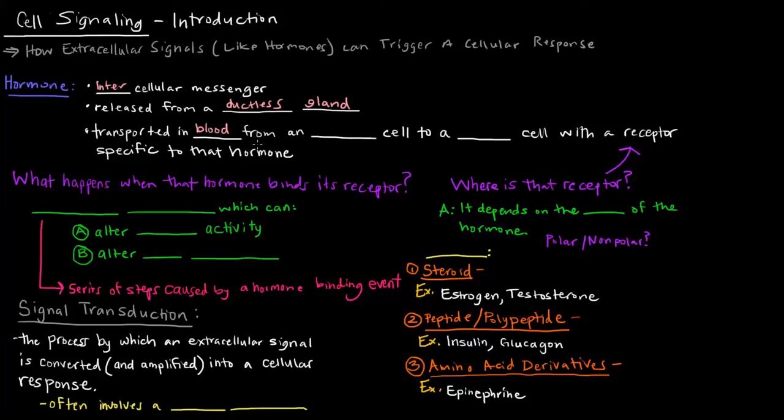Hormones travel from an endocrine cell in one portion of the body to a target cell somewhere else in the body, usually far away. That target cell has a receptor that is specific to that hormone. We find that hormones are very specific as far as what they bind to.